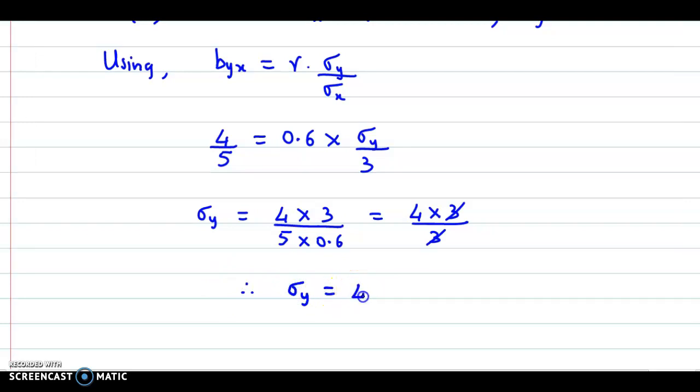We can get the same answer if we use bxy. That formula is bxy equals r into sigma x upon sigma y. From that formula also we can easily find standard deviation of y. Standard deviation of y is equal to 4.